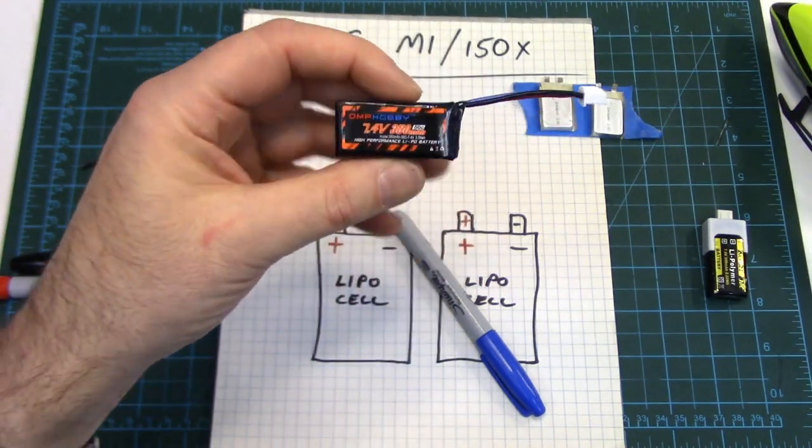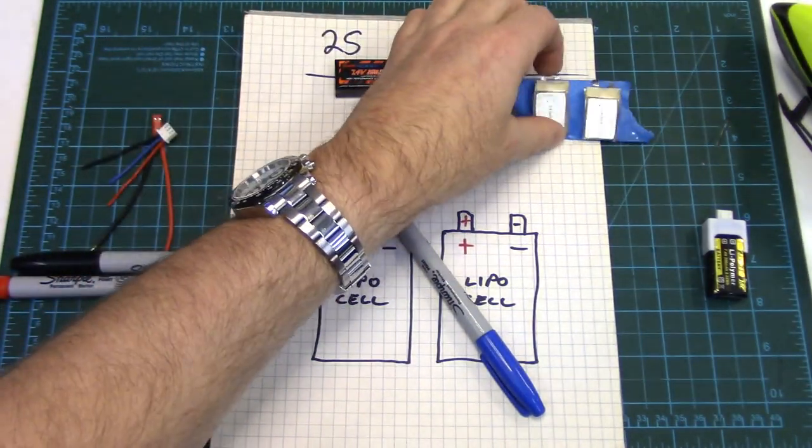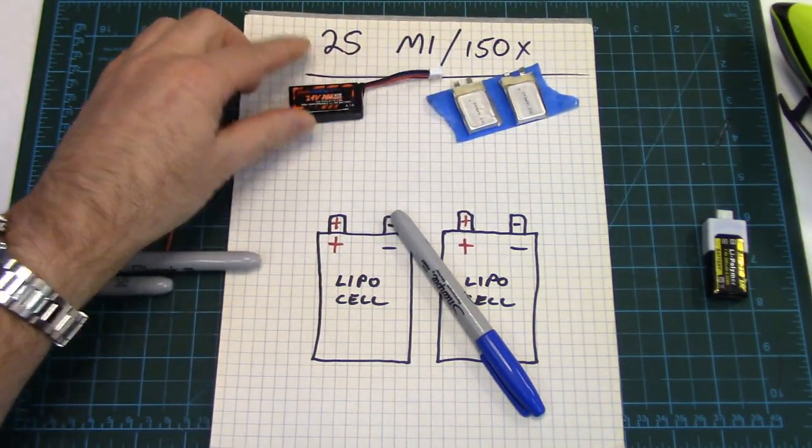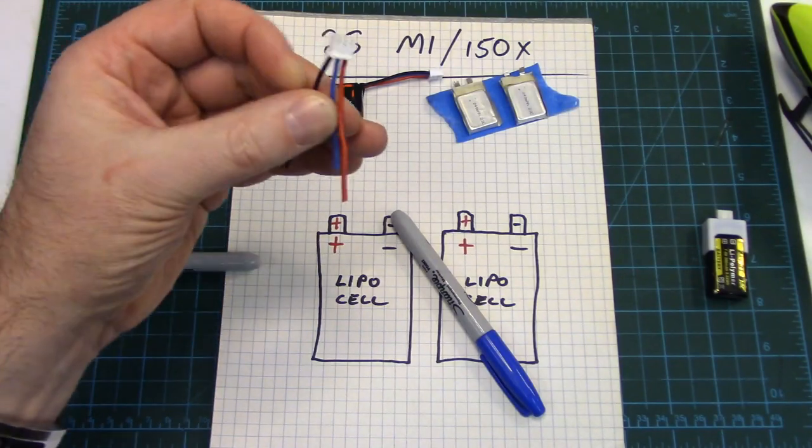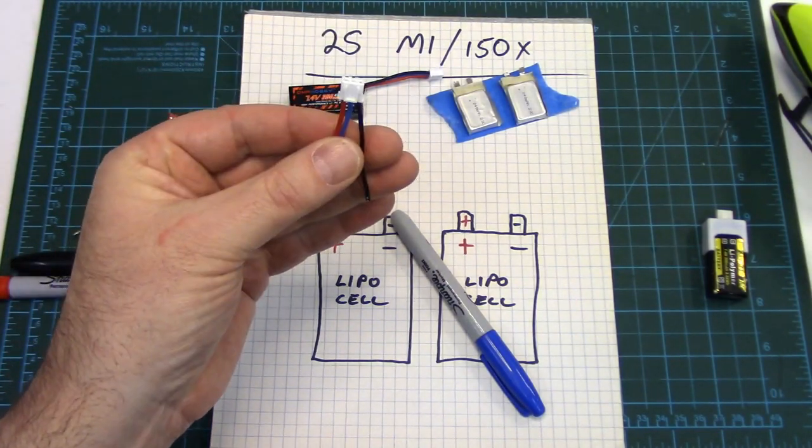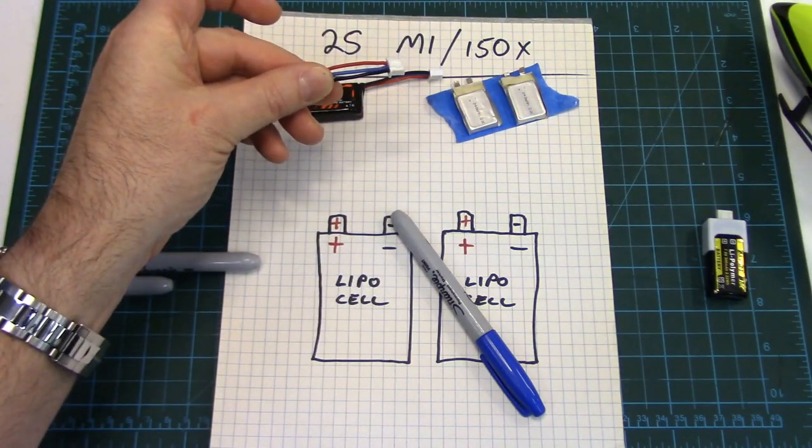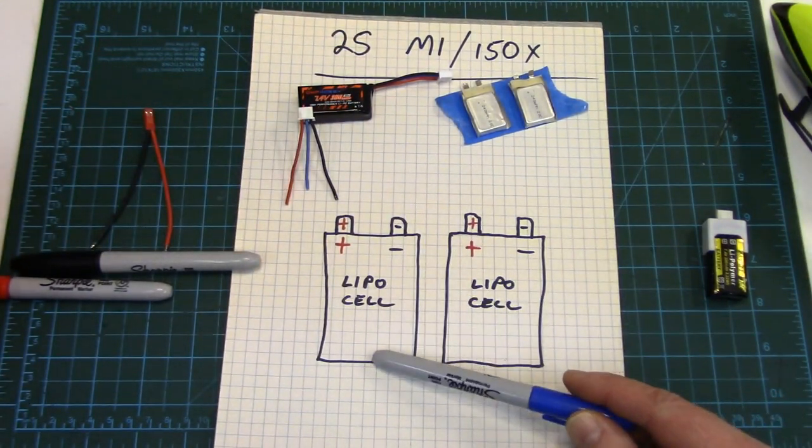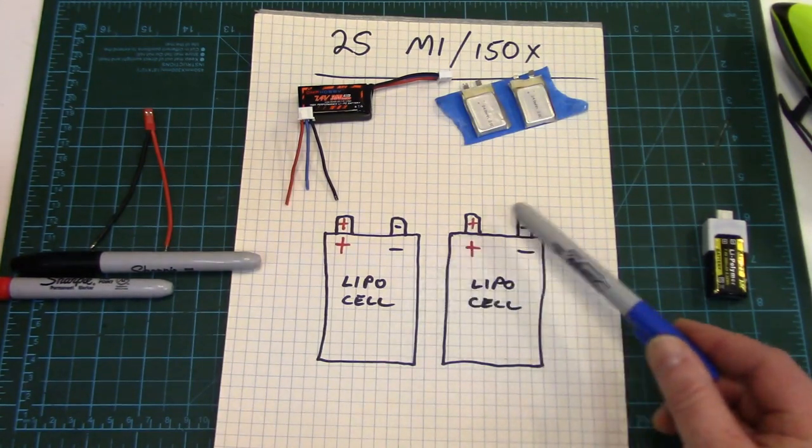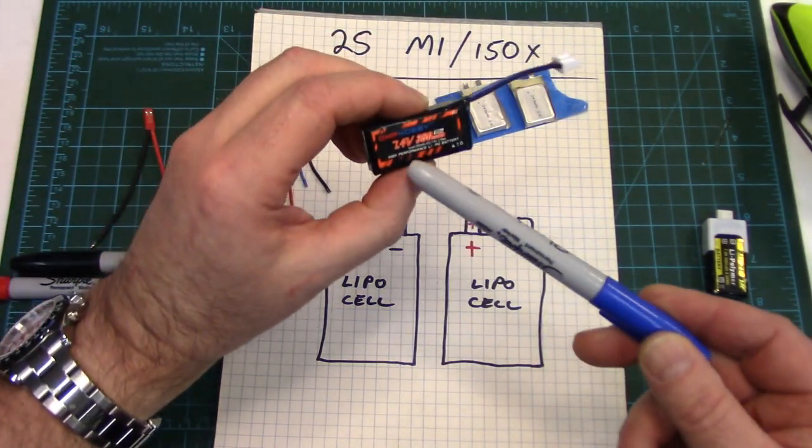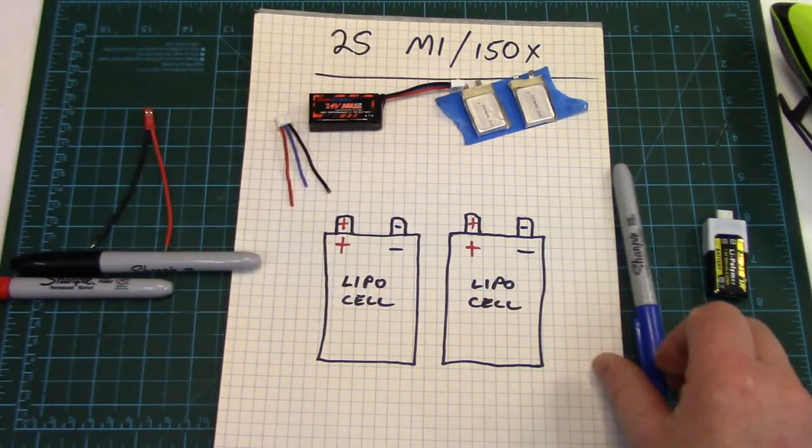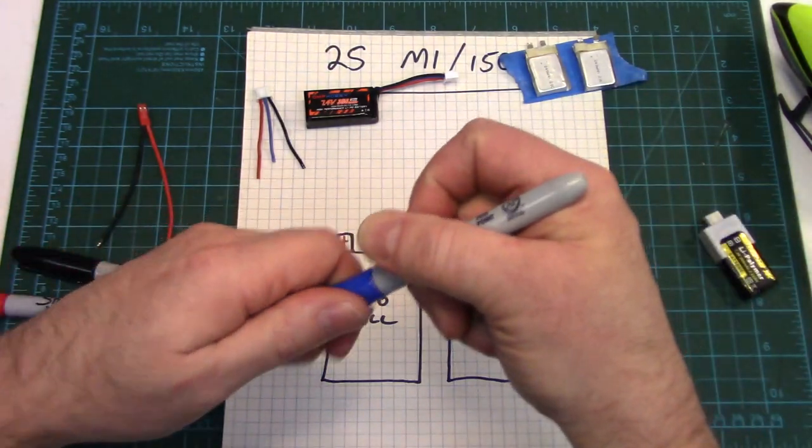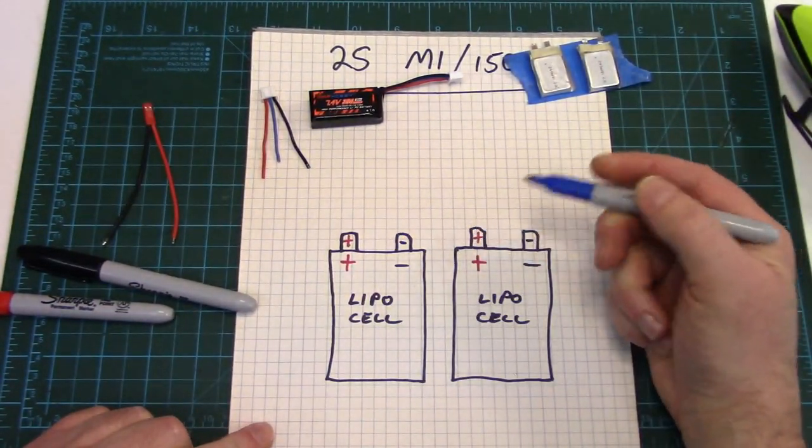So if you were to open this up, essentially what you would find is two lipo cells. They'd be stacked on top of each other along with a little three pin JST-XH balance plug.